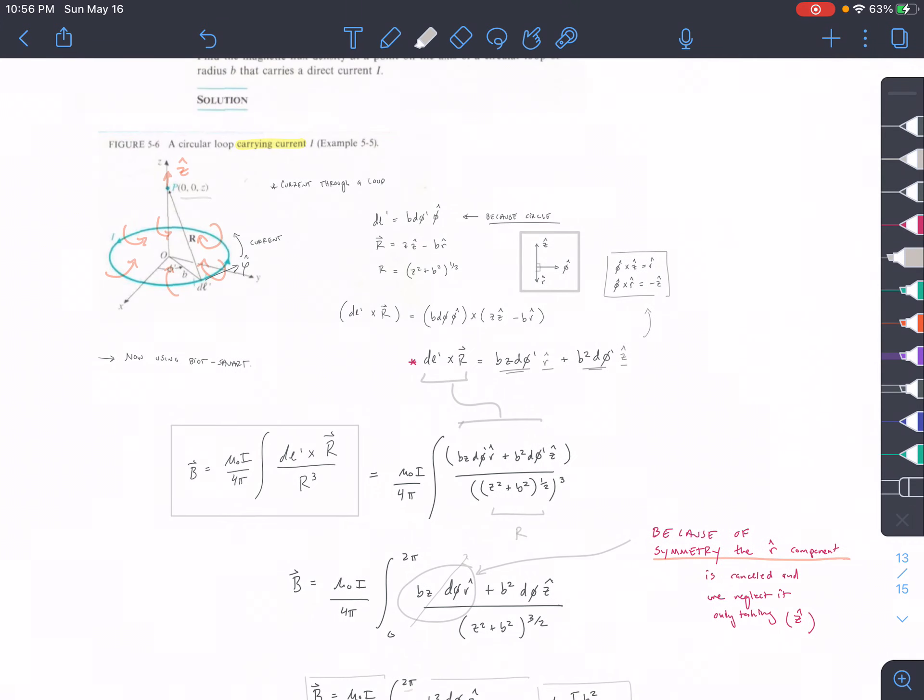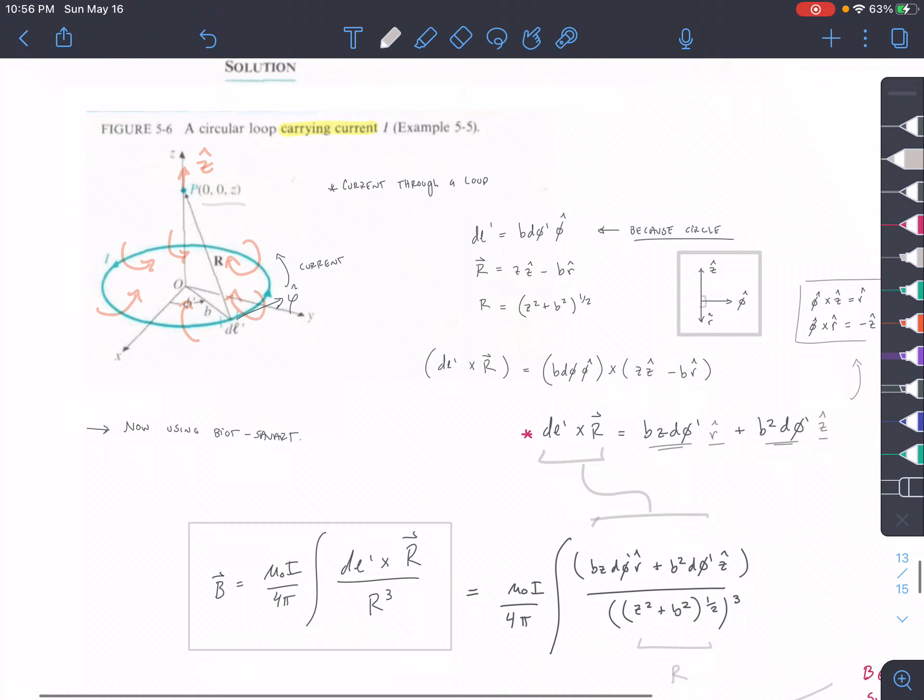So this is our resulting B-field at this point (0, 0, Z) on the line. So this is our B-field here, and we are experiencing a force in the positive Z-hat direction up here. That is our resulting B-field.